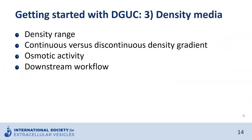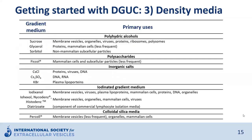Different density media can be used to prepare the density gradient. The choice of density medium depends on multiple parameters, including the density range, the use of continuous versus discontinuous density gradients, and downstream applications. Iodixanol and sucrose are the most used density media for extracellular vesicle research. Iodixanol is self-forming, in contrast to sucrose, which is used to establish discontinuous gradients. Iodixanol has a low viscosity and is iso-osmotic, while sucrose has a high viscosity and high osmolality.